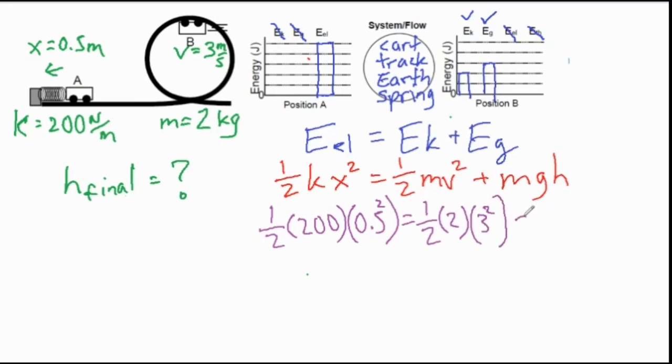3 squared. Plus mgh. That same mass of 2. G is always 9.8. And we are looking for h. So we do not have an h value.